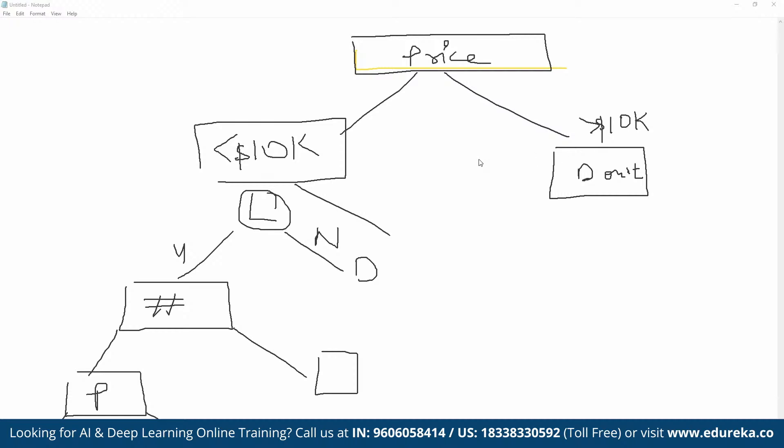Decision trees are built on the entire data set using all the variables. After creating multiple decision trees, each tree votes on a class. To conclude: decision trees are built on the entire data set using all variables, whereas random forest creates multiple decision trees where each decision tree is built on only a part of the data set.